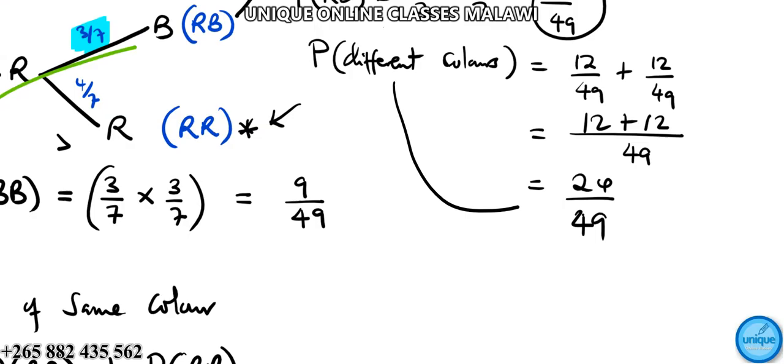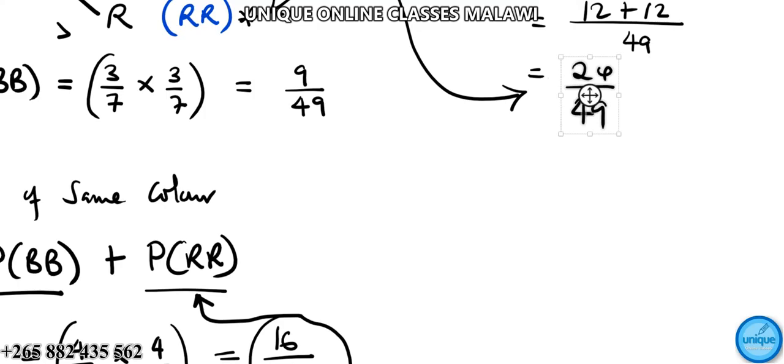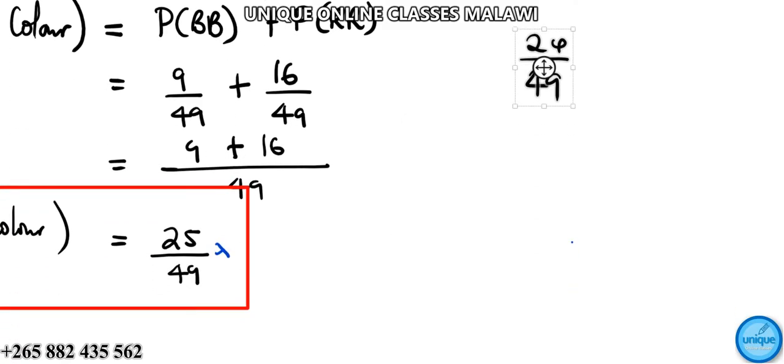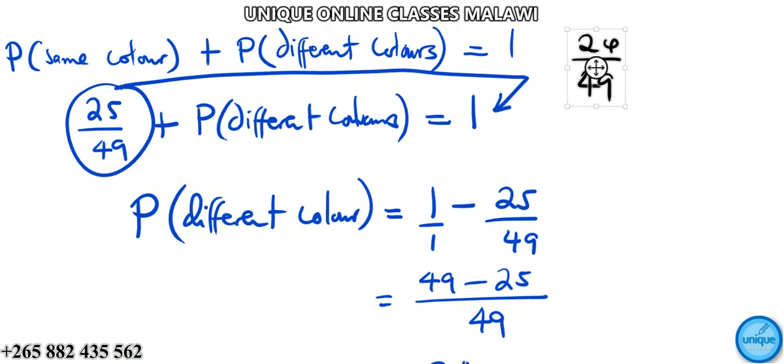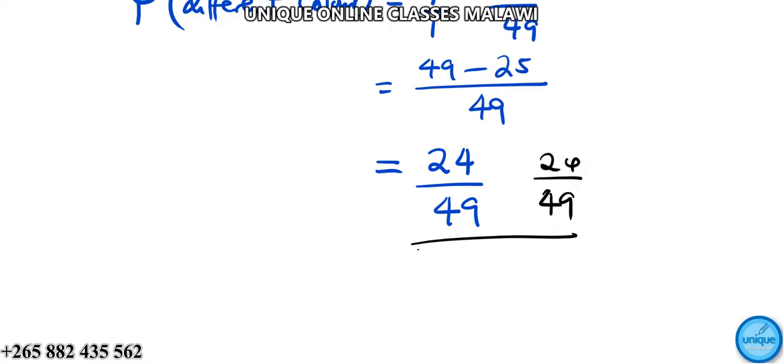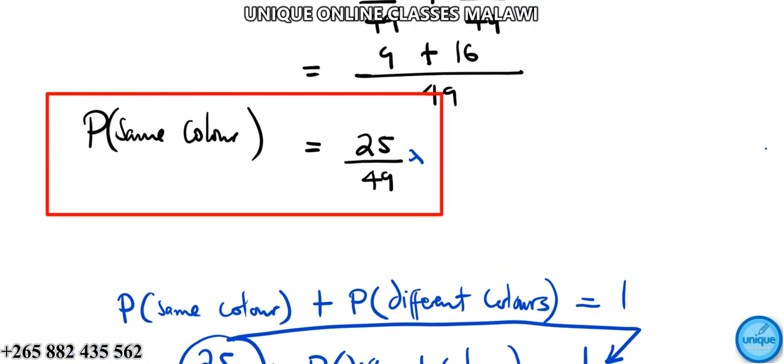This is the probability of having pens of different colors, which is the same result. You can use either method and get the same answer. We are done. If you've enjoyed this video, please don't forget to subscribe to my YouTube channel and like my Facebook page, Unique Online Classes. Thanks for watching and I wish you all the best.